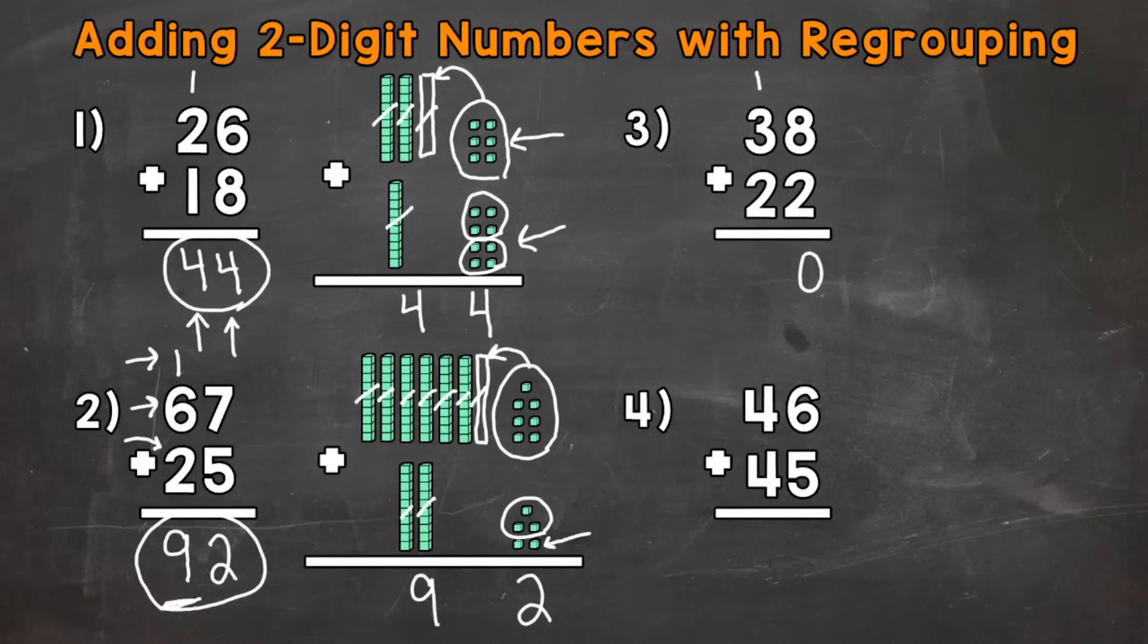So now we add our tens. So 1 ten plus 3 tens plus 2 tens. 1 plus 3 is 4, plus 2 is 6. So we get a final answer of 60.